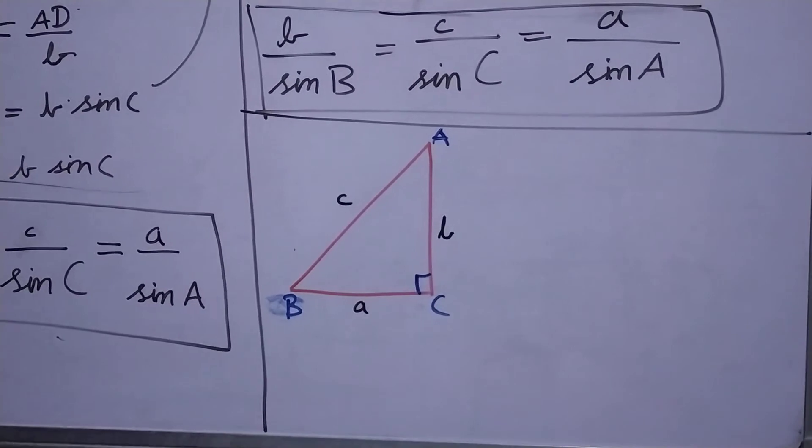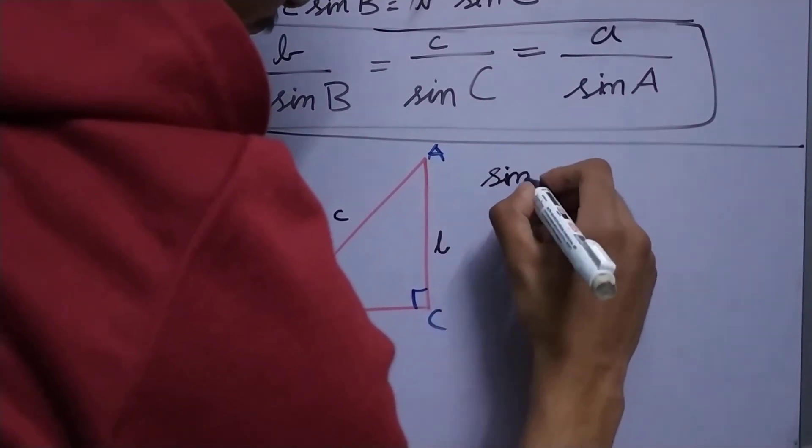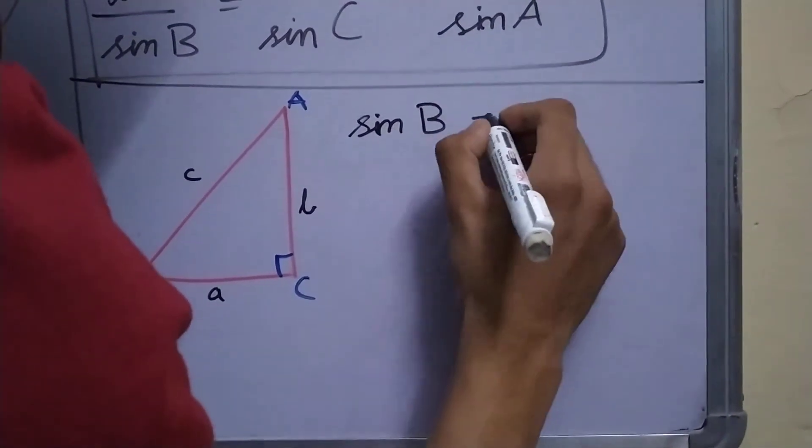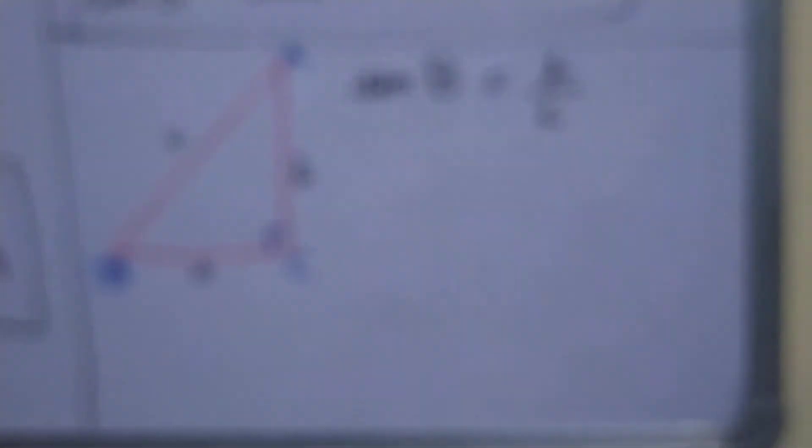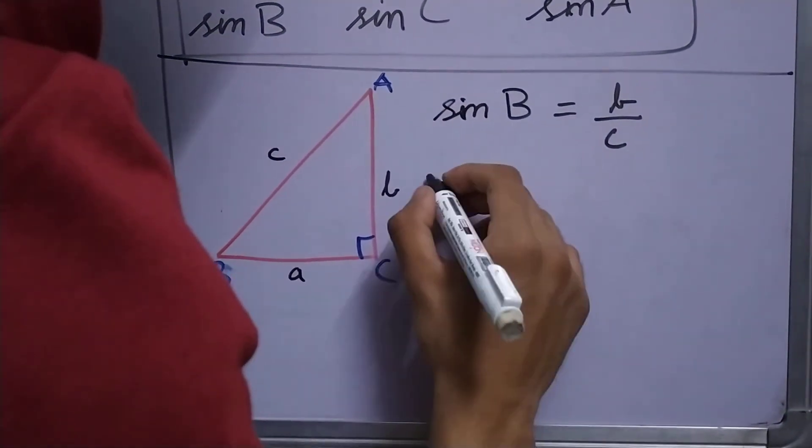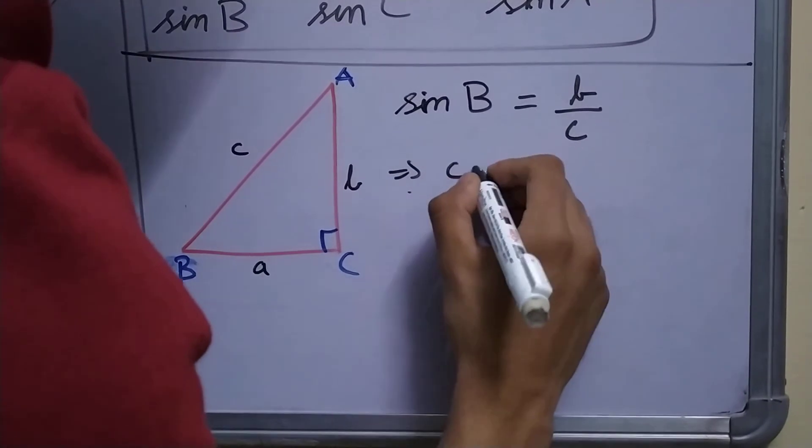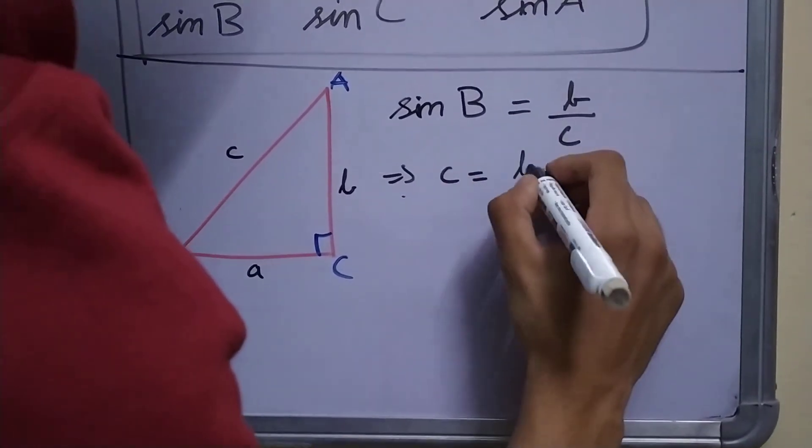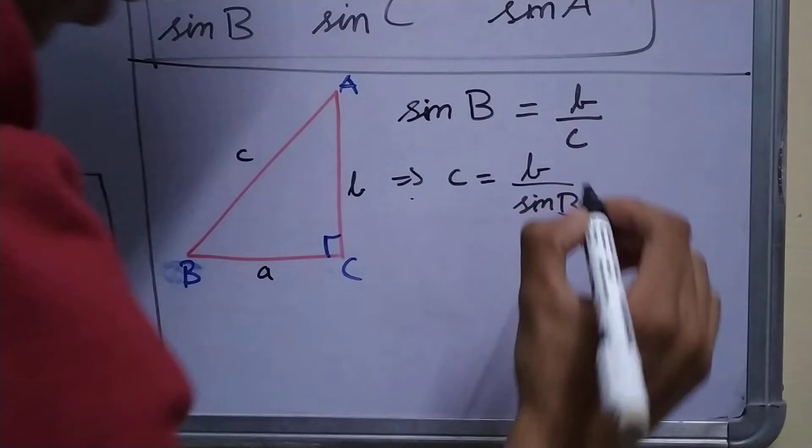Now, what is sin B? Sin B is b upon c, which means that c is equal to b upon sin B.